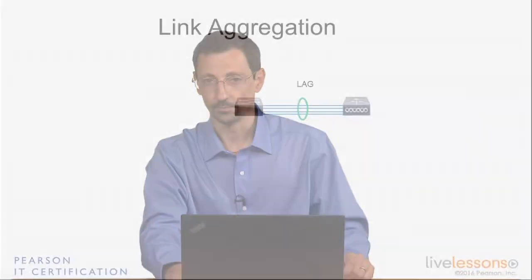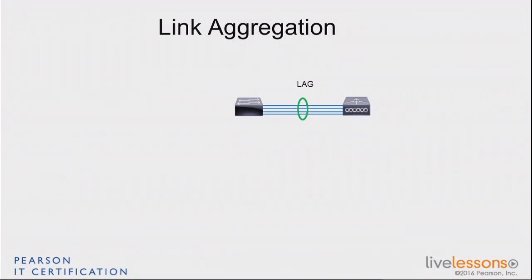Link Aggregation is another concept you should be familiar with. It allows you to group together several ports on the controller and connect them all to a switch, treating those four physical ports as one big virtual link to the switch. It groups ports together to create virtual communication that is four times faster than each individual port, but is still seen as one virtual common link.